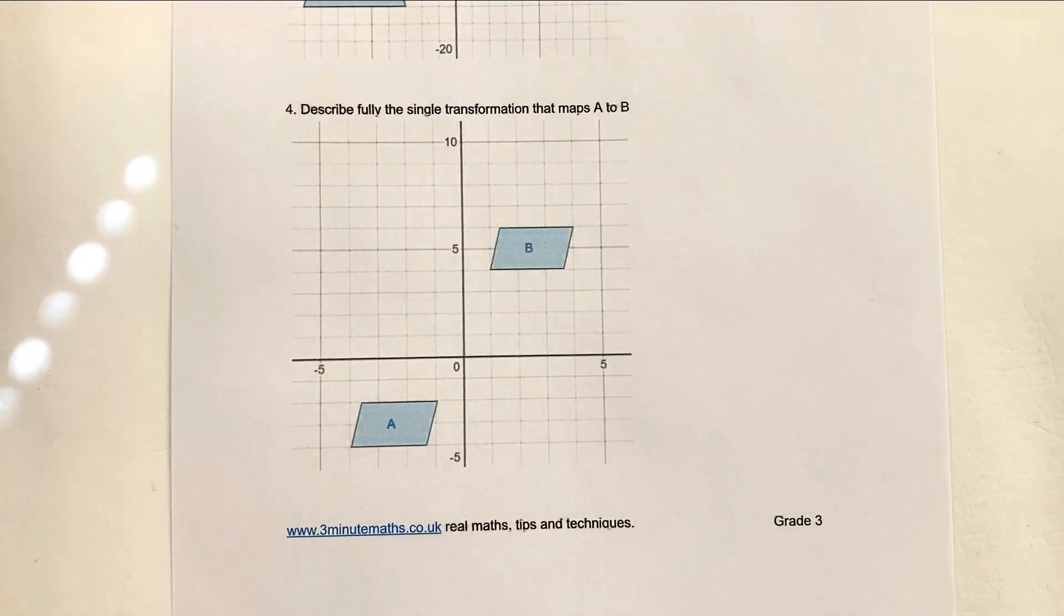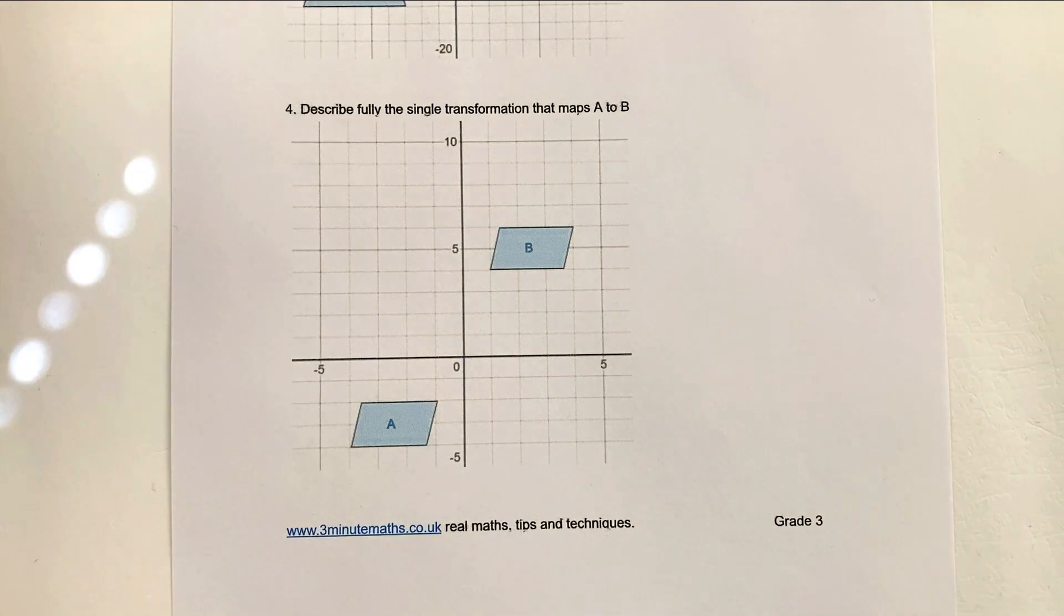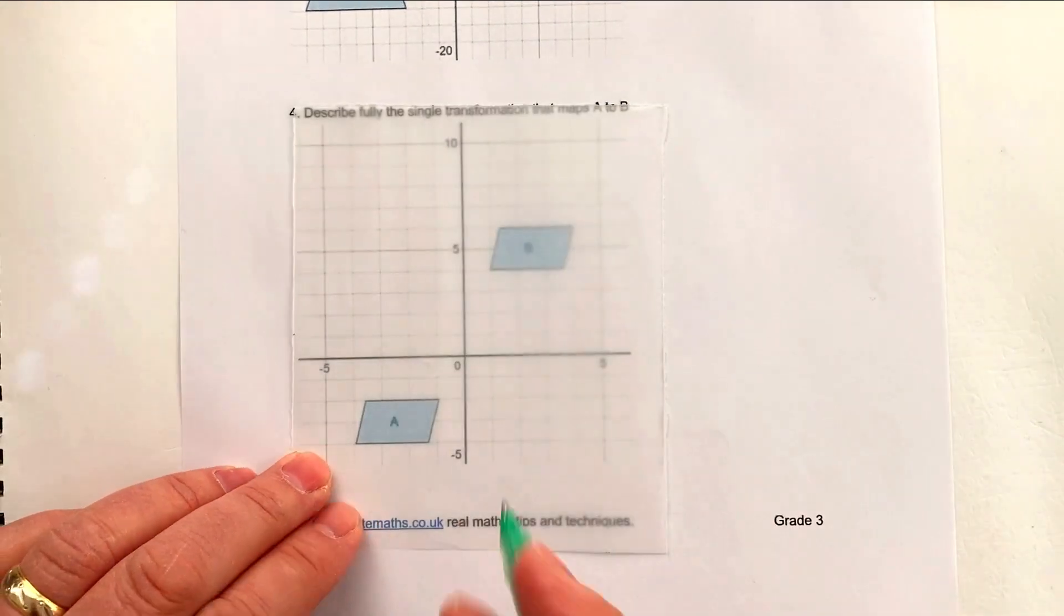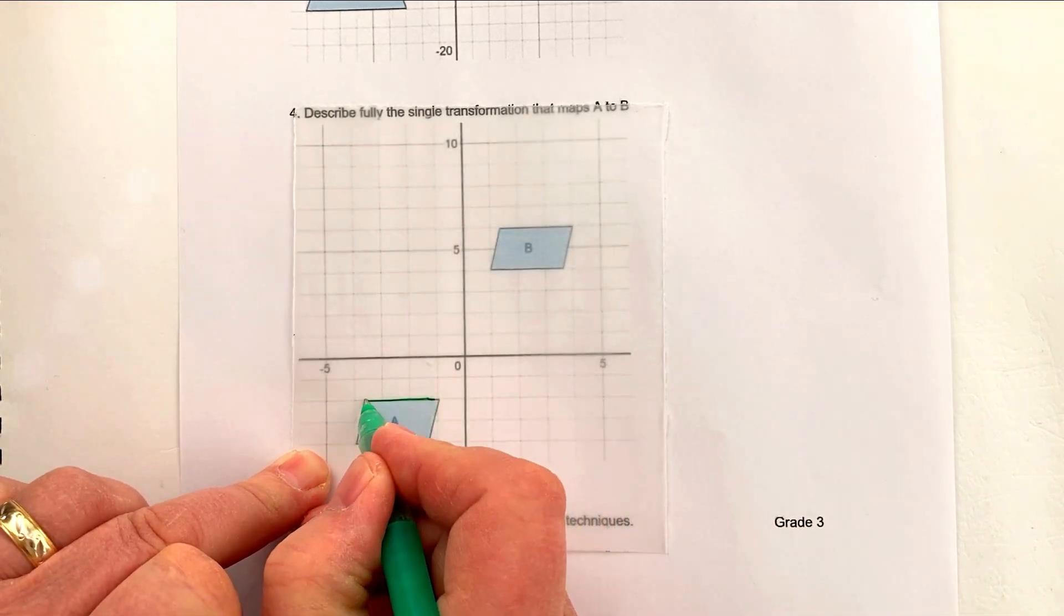Describe the single transformation. Well, hopefully you can see that it is a rotation. It's a rotation around a particular point. So again, if I use my tracing paper, I'm going to go from A to B. Now, again, I could use lines if I wanted to, but I'm just going to sort of take a guess.